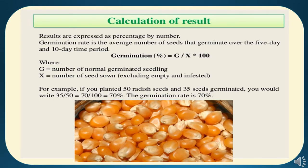To study the calculation of germination result: germination percentage is defined as the number of normal germinated seedlings divided by the number of seeds sown, multiplied by 100. Empty and infested seeds are excluded. For example, if we plant 50 radish seeds and 35 seeds germinate, then the germination percent will be 35 divided by 50 multiplied by 100, which equals 70 percent.